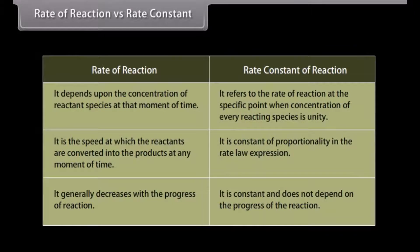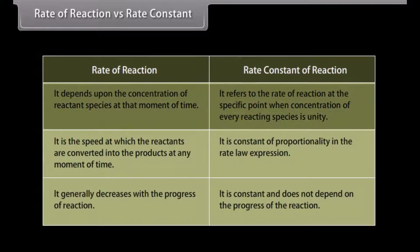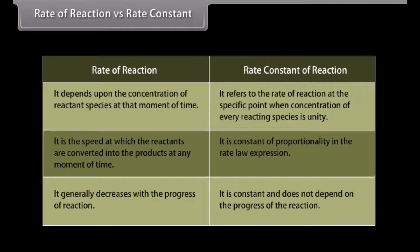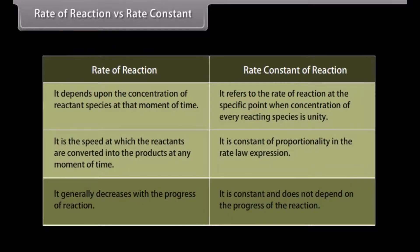Rate of reaction versus rate constant. The important differences: rate of reaction depends upon the concentration of reactant species at that moment of time, while rate constant refers to the rate when concentration of every reacting species is unity. Rate of reaction is the speed at which reactants are converted into products at any moment of time, while rate constant is the constant of proportionality in the rate law expression. Rate of reaction generally decreases with the progress of reaction, whereas rate constant is constant and does not depend on the progress of the reaction.